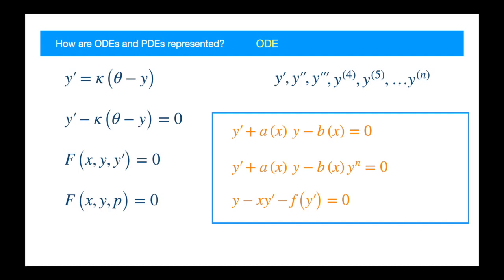For some purposes, it is convenient to represent the equation in the normal form. Essentially, you isolate the highest derivative on one side. As you can see, not all equations can be represented in this form. Obvious example being the third equation.